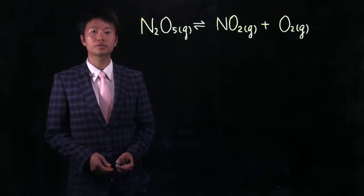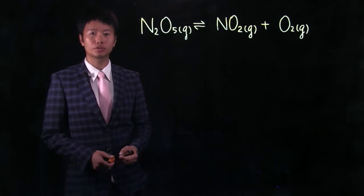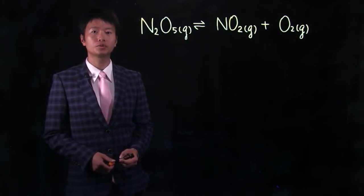In this sample problem, we are asked to write down the reaction quotient for this chemical reaction, which is the decomposition of dinitrogen pentaoxide.